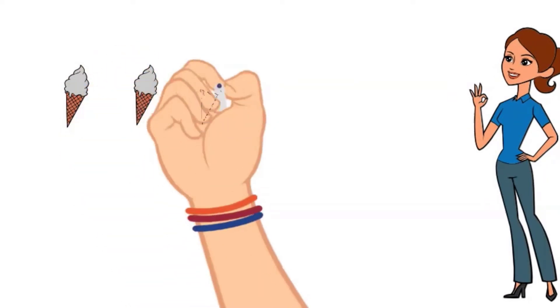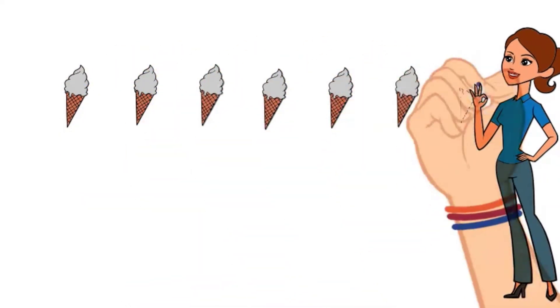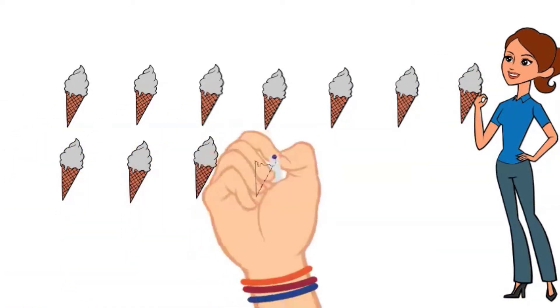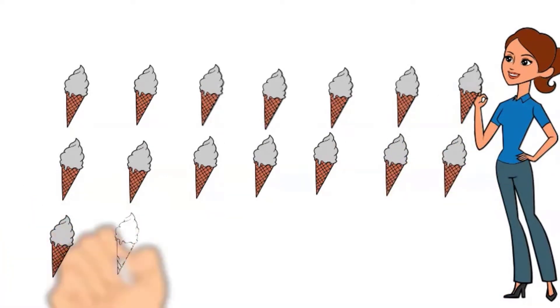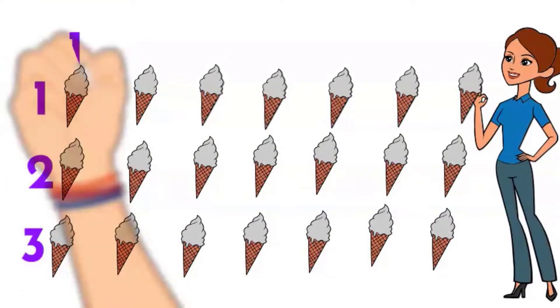One, two, three, four, five, six, seven, eight, nine, ten, eleven, twelve, thirteen, fourteen, fifteen, sixteen, seventeen, eighteen, nineteen, twenty, twenty-one total ice cream cones.